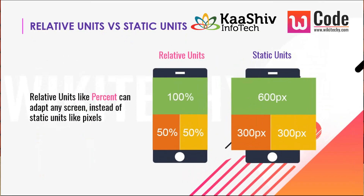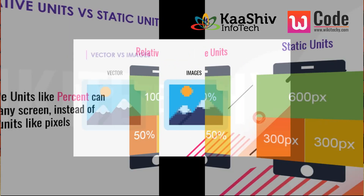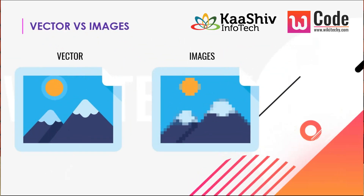Responsive design uses relative units in percentage format. In static units you use pixels, whereas in relative units it's percentage — 100%, 50%, 20% — so percentage enables you to design websites for multiple devices. Bootstrap frameworks use this approach.